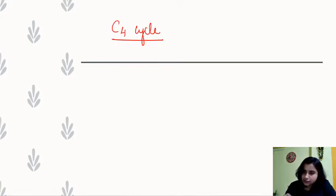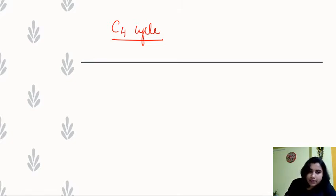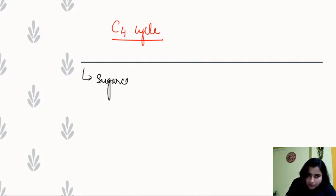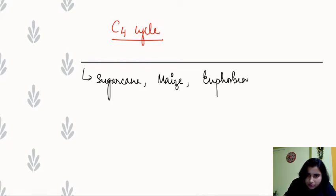The C4 cycle is basically found in those plants which are found in the warmer areas. For example, the plants which show this cycle are sugarcane, maize, euphorbia, etc.